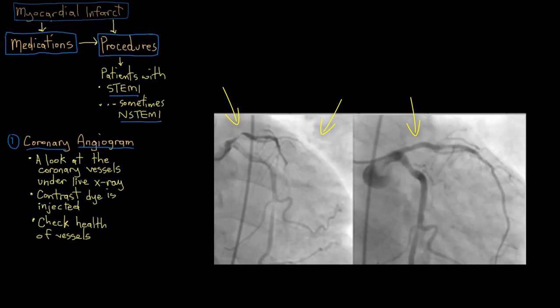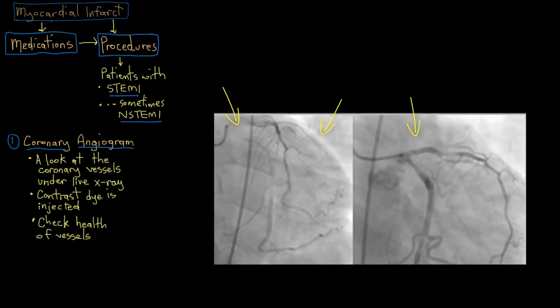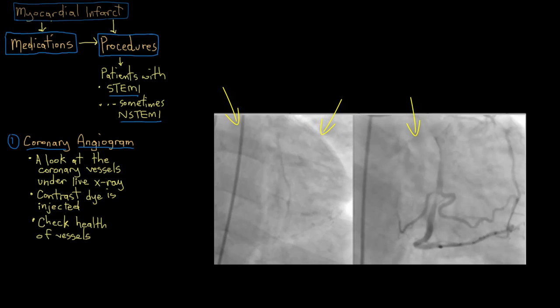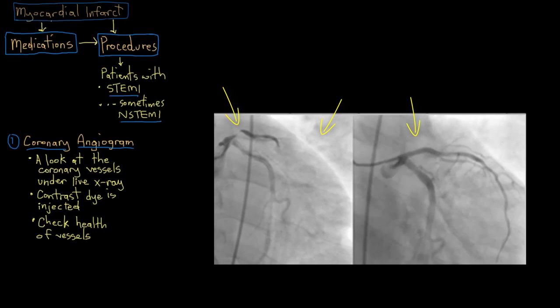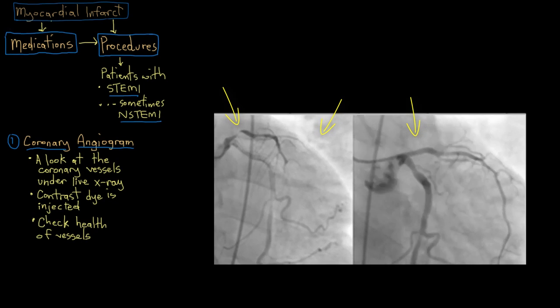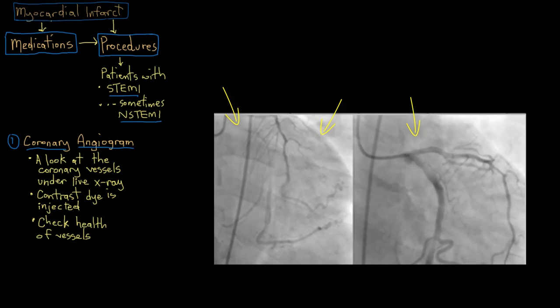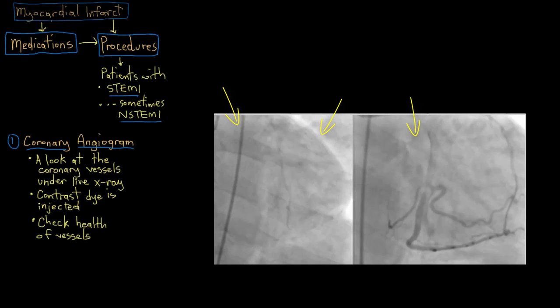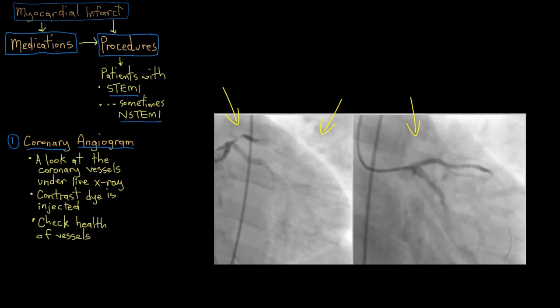So depending on how bad the clogging is inside a given person's coronary arteries, the cardiologist will then go on to make a recommendation for what procedure to move onto next to fix the underlying problem with someone's heart. So let's actually have a look at a few of these procedures.